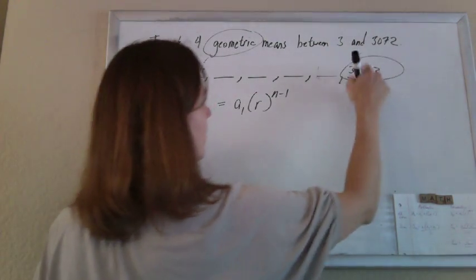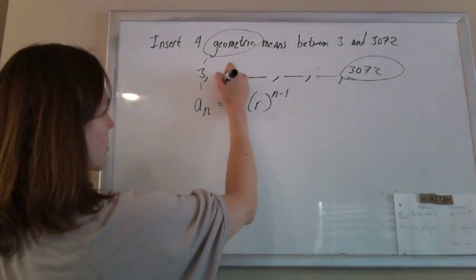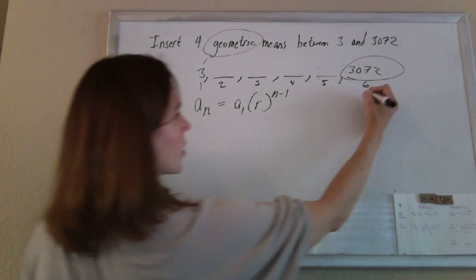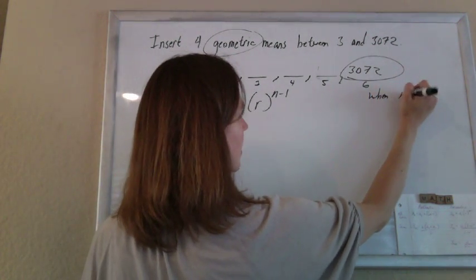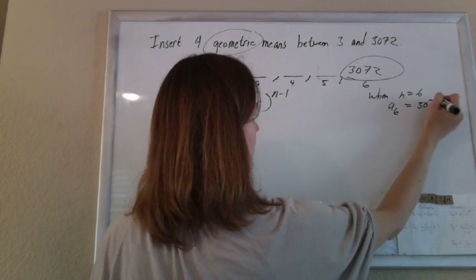But they do give me some information about the last term. I know that this is my first term, second term, third term, fourth term, fifth term, sixth term. So I know that when n is 6, the nth term, the sixth term should be 3072.